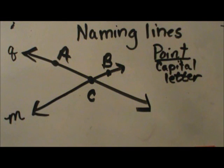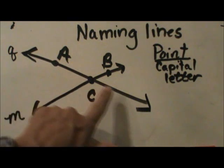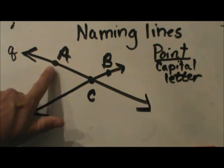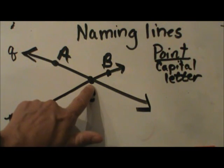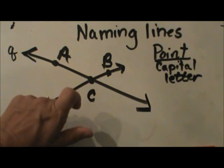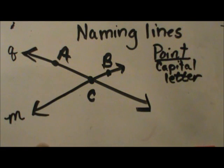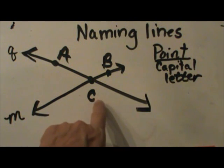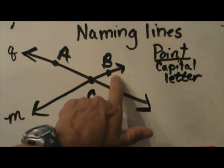There are two ways to name each line. This one we can name line A, C, with capital letters, or C, A. This other line we can name as C, B, or B, C.